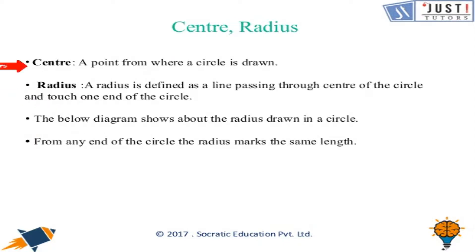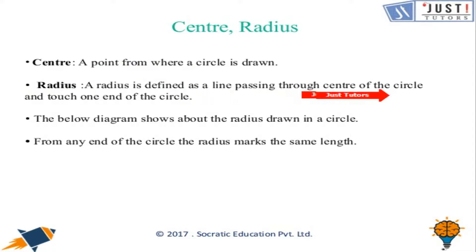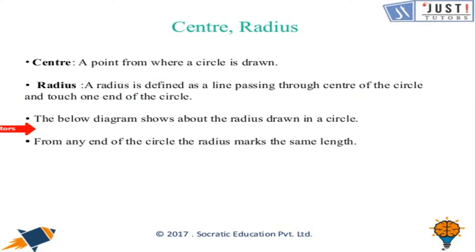What is the center? A point from where a circle is drawn. What is the radius? A radius is defined as the line passing through the center of the circle and touching one end of the circle. We'll look at the diagram here.